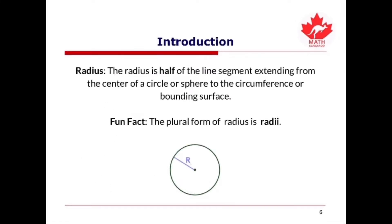The radius is half of the line segment extending from the center of a circle or sphere to the circumference or bounding surface, as shown on the screen. As a fun fact, did you know that the plural form of radius is radii?